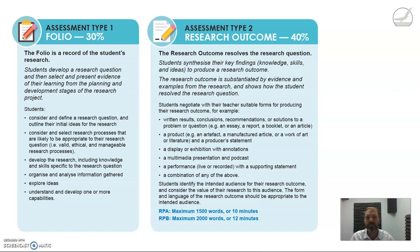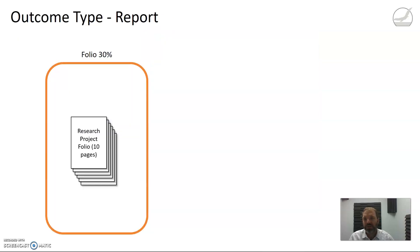The size of the outcome depends on whether you're doing research project A or B. You can see here that research project A is 1,500 words or 10 minutes if it's in a video or multimodal format, and 2,000 words or 12 minutes for those other types. So let's have a look at what that would end up being.